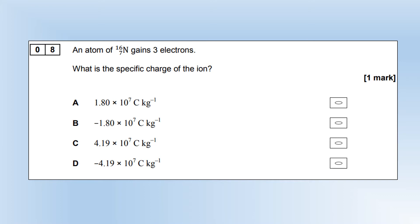It's gained three electrons, so it's going to have a charge of minus 3 times 1.6 times 10 to the minus 19. Its total mass is going to be the 16 nucleons. Divide those together and we get a specific charge of minus 1.8 times 10 to the 7, which is B.